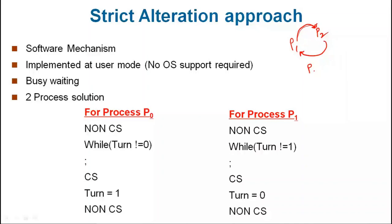This is the strict alternation approach. First of all we have to check the condition. There will be a software mechanism, there will be any operating system additional support required. Now, what is in this solution? There are two processes: P0 process and P1 process.